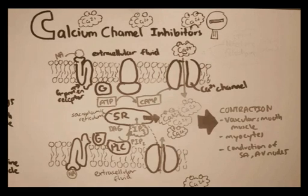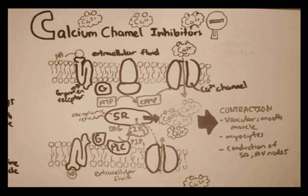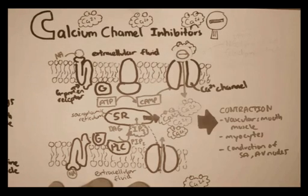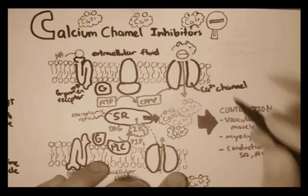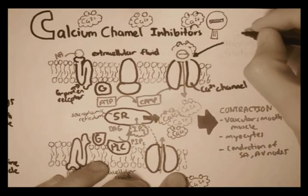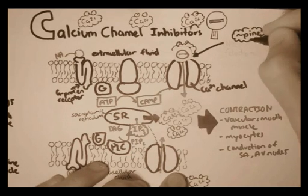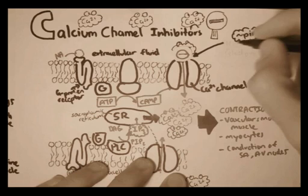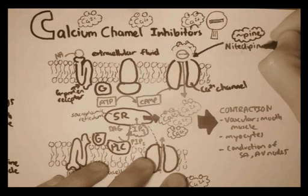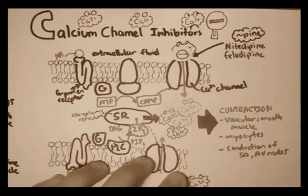So what calcium channel blockers do, essentially, is block the channels that allow the influx of calcium ions. Calcium channel blockers usually end in -pine, but not all — for example, nifedipine and felodipine.